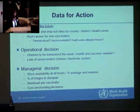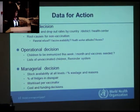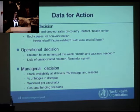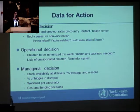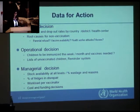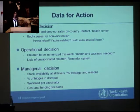Data is needed for action. For strategic decisions — such as deciding what strategy to apply to a country, whether the issue is dropout or access, what are root causes for non-vaccination, parental refusal, vaccine unavailability, or health worker attitudes. For operational decisions — which children need to be immunized this week, how many vaccines are needed, the list of unvaccinated children, the reminder system. And for managerial decisions such as stock availability, percent of wastage, whether fridges are in appropriate order, workload per vaccination, and cost and funding decisions.